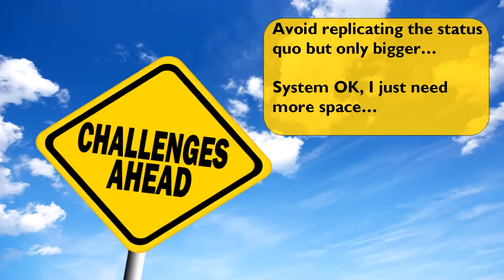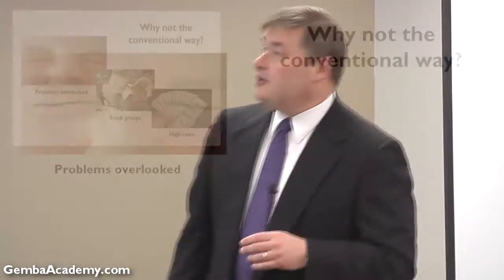Our challenge in the 3P approach is we want to avoid replicating the status quo, only bigger. Normally when you have a new design — especially with a hospital — people come up with the exact same processes, the exact same functions, only bigger. People say the systems are okay, they're not perfect, but I just need more space. Well, let's look at what space you have, look at the flow first, and then decide from the processes what space you need.